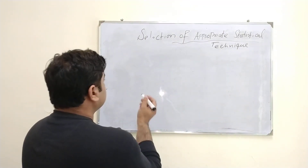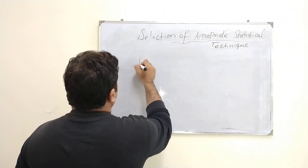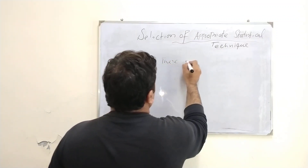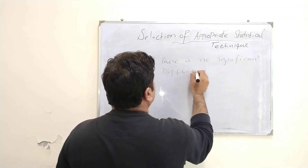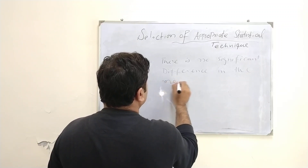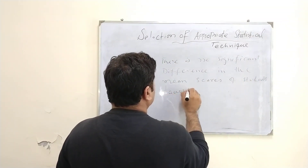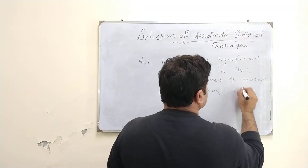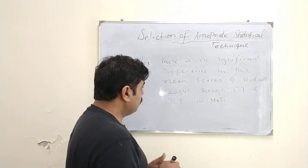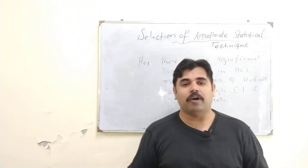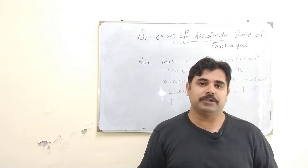Now here is an example for you: The null hypothesis H₀ is 'there is no significant difference in the mean scores of students taught through collaborative teaching and traditional teaching in mathematics.' Please tell me in the comments which statistical technique should be applied for testing this hypothesis. I hope you understood. If you have any questions, you may ask in the comments.